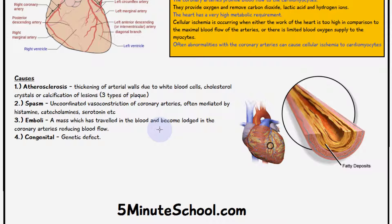Coronary artery disease can also occur due to some kind of spasm — an uncoordinated vasoconstriction of the coronary arteries — and this is often mediated by histamine, catecholamines, and serotonin, for example.